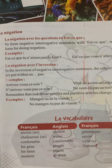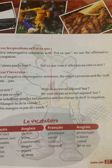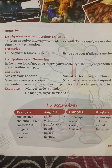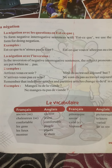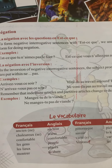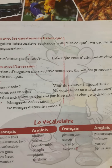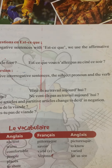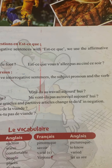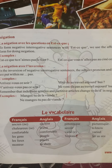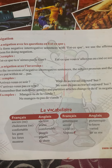In inversion form, a negative is formed by placing the subject pronoun and verb within 'ne' and 'pas'. Example: 'Arrive-vous ce soir?' becomes 'N'arrive-vous pas ce soir?' — structure: ne + verb + subject + pas + object + question mark. Similarly: 'Vont-ils au travail aujourd'hui?' becomes 'Ne vont-ils pas au travail aujourd'hui?' meaning 'Are they not going to work today?'